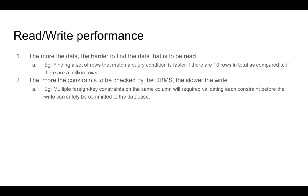Let us see how we would think about the read and write performance of a database. The more data that is stored in a database, the harder it is to find that data. For example, finding a set of rows out of a table with 10 rows is much faster than finding rows matching a condition in a table with a million rows. When we write to a DBMS, the number of constraints that have to be checked is what affects write performance. For example, if we have 10 foreign key constraints on a column value, the DBMS has to validate each of those 10 constraints before the value can be safely committed. These are not the only two factors, but from an application development point of view, these are the two broad things to worry about first.